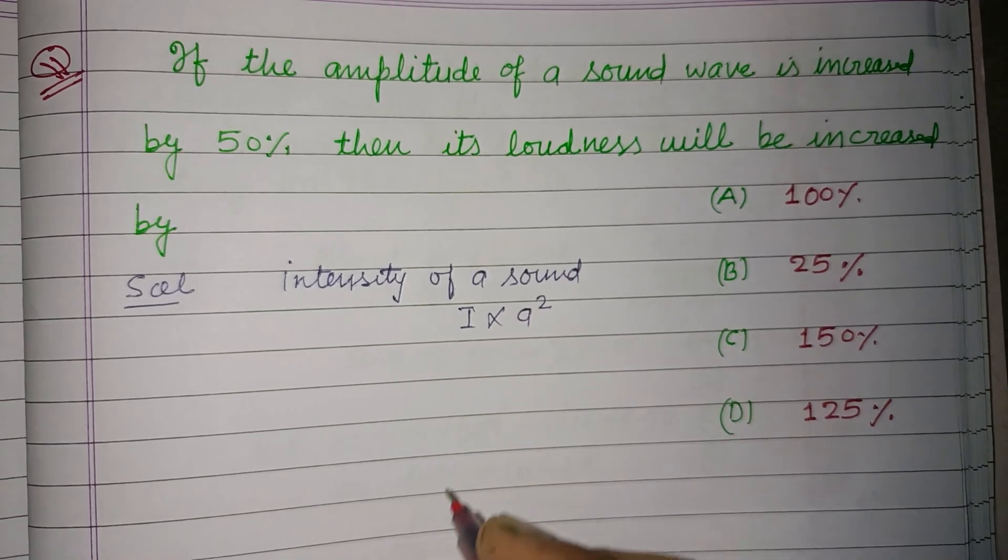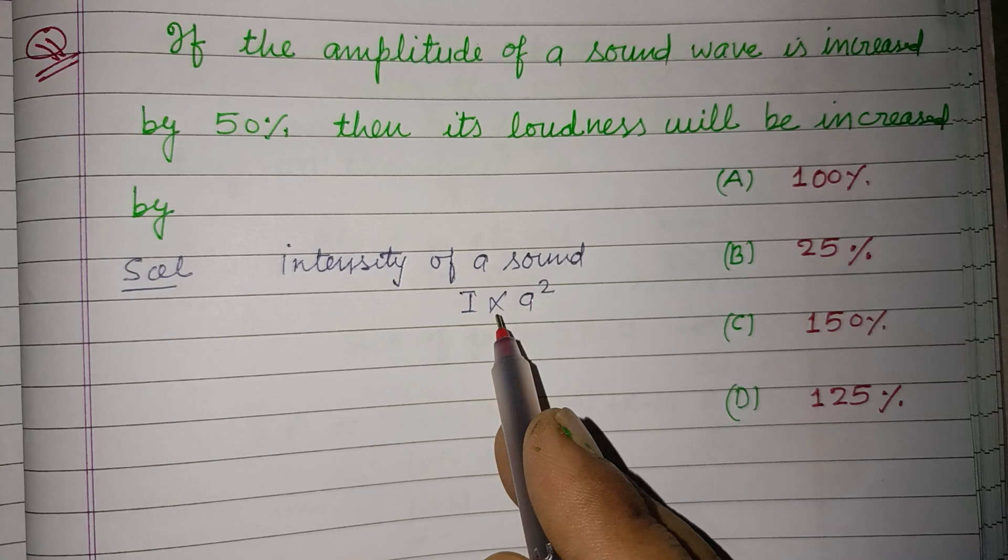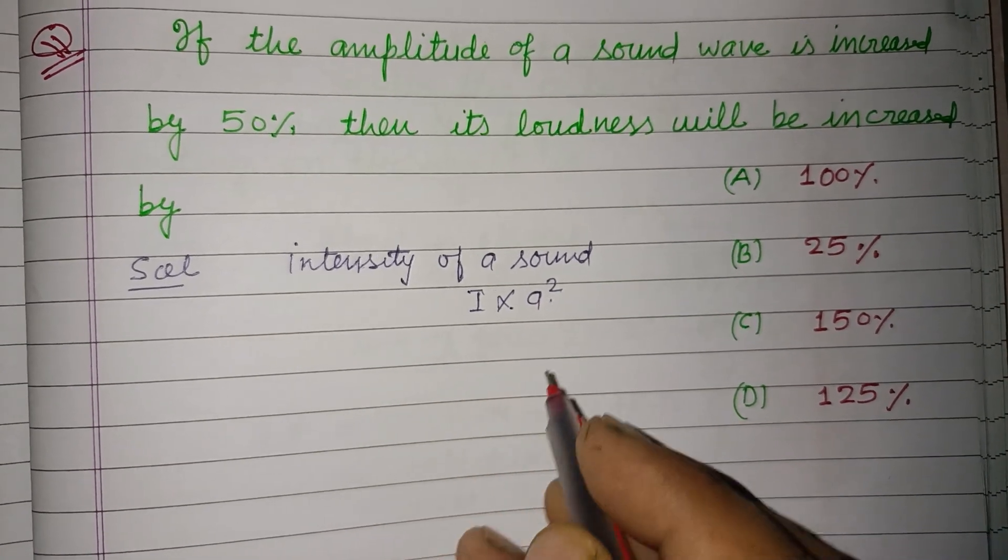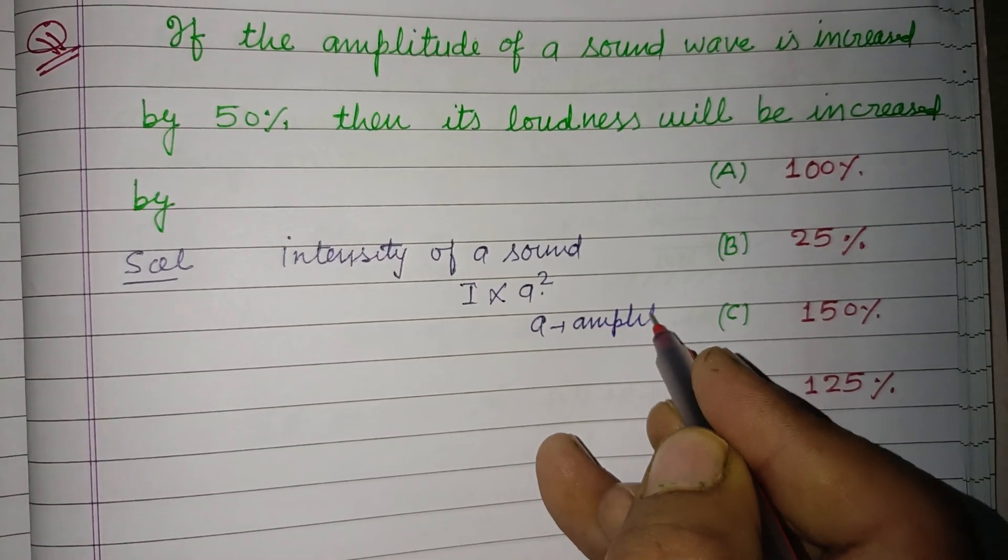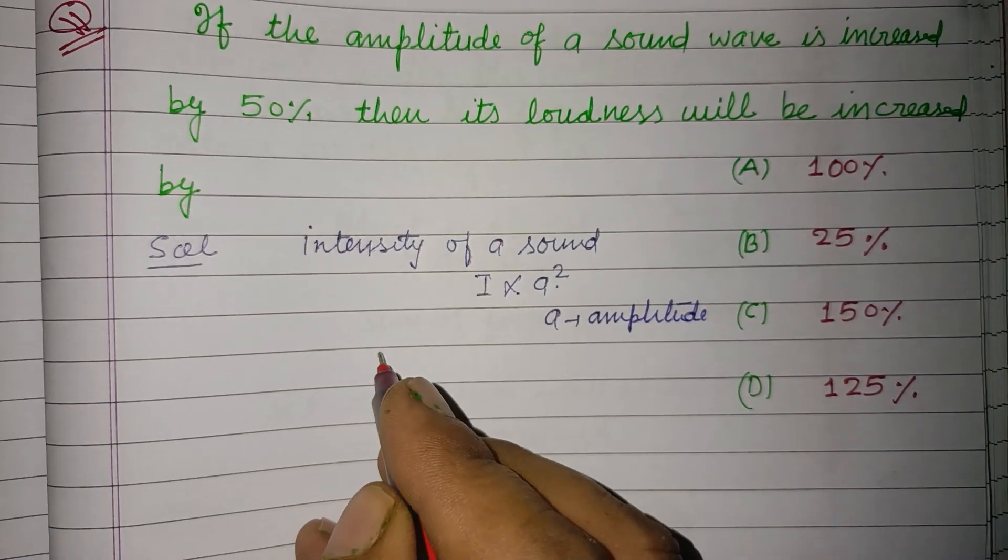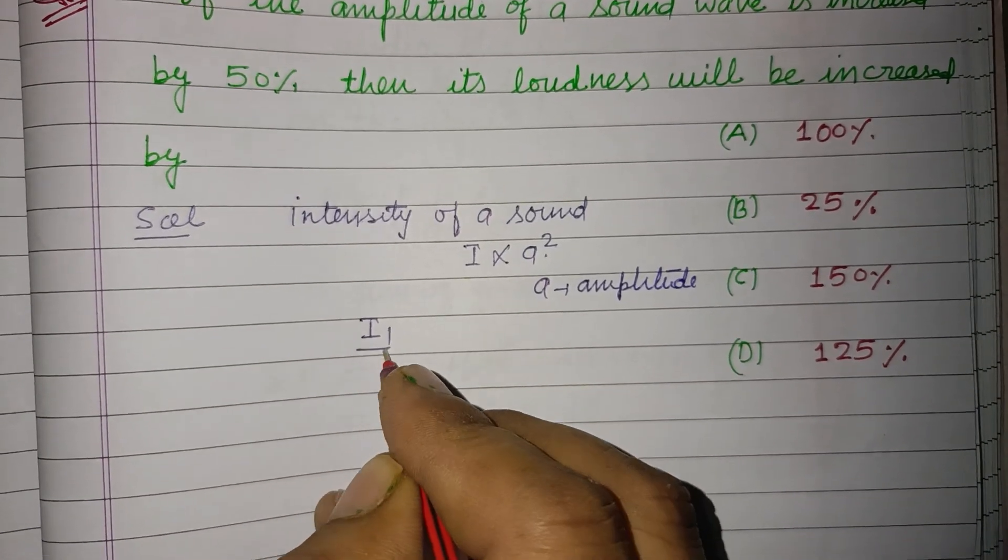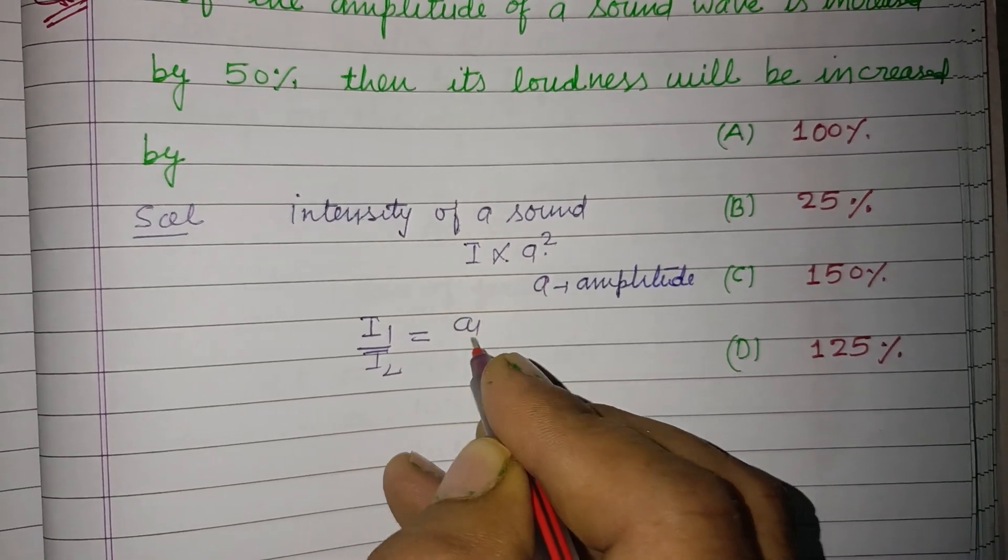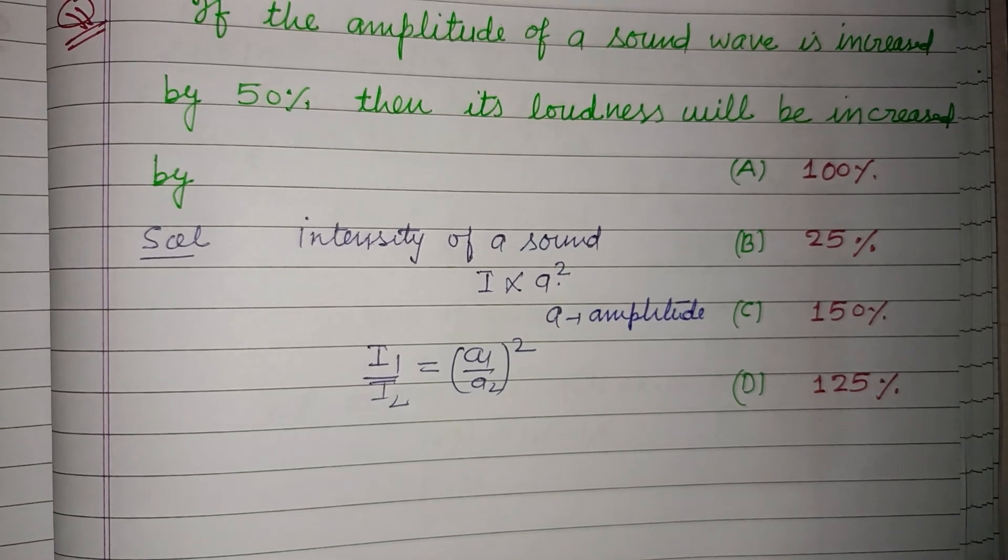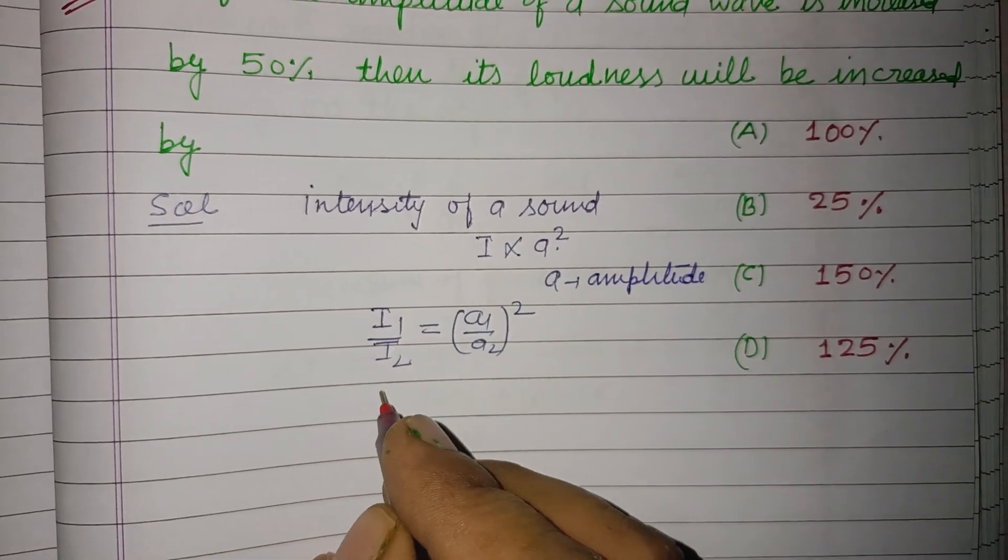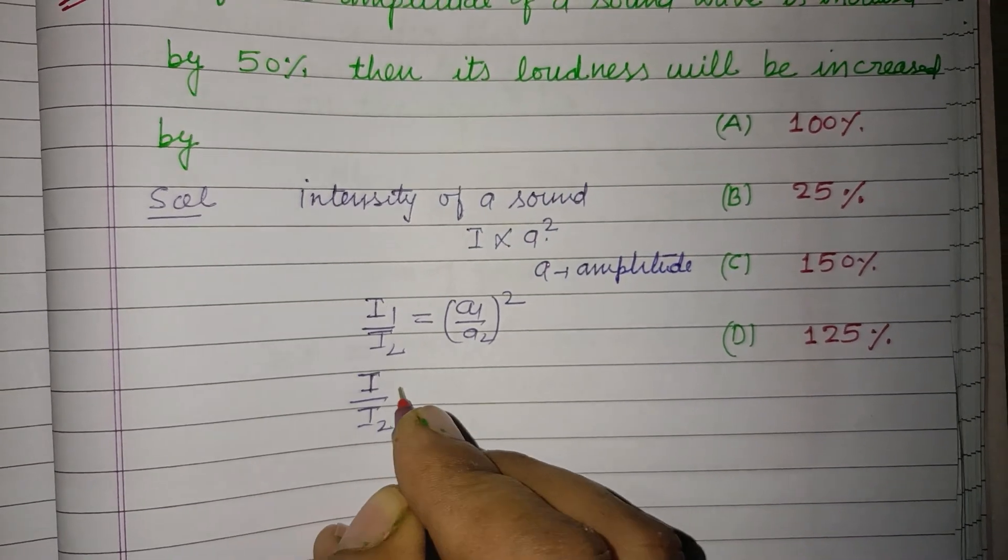Loudness of sound depends on intensity, so I is directly proportional to a squared, where a is amplitude. Therefore, I1 upon I2 equals a1 upon a2 whole squared. If the initial intensity is I and final intensity is I2, and a1 is a and a2 is increased.